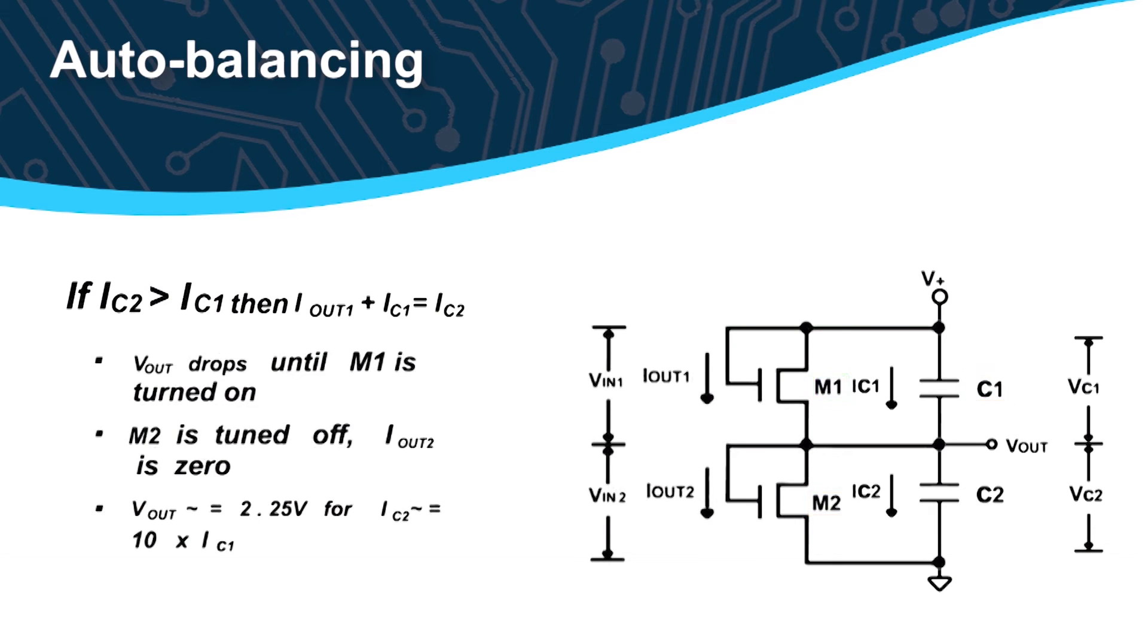When the compensating SAB MOSFET turns itself off, the total leakage current is only equal to the higher of the two, contributed by the supercapacitor that has the highest leakage current in the stack.